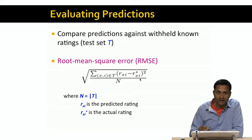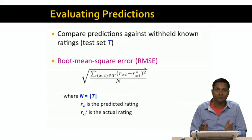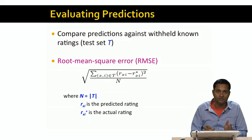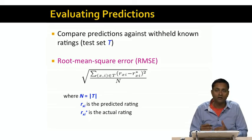We're going to take the difference of those two and square it, and sum of those squares across all the withheld ratings, and divide by the total number of withheld ratings, which is n, and just take the square root of that. So this is the root mean square error, or RMSE. And it's the most commonly used measure to evaluate a collaborative filtering system.